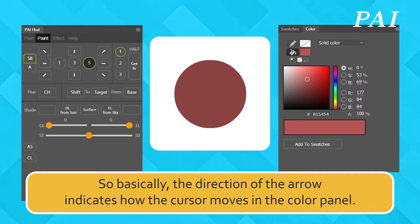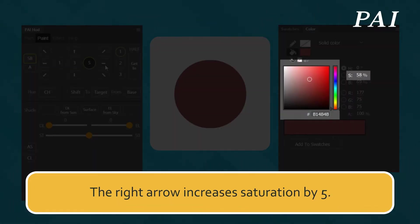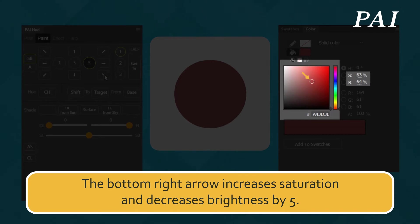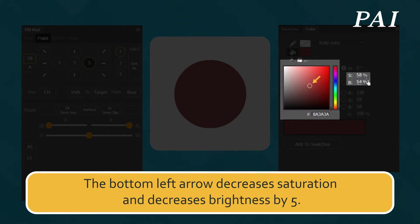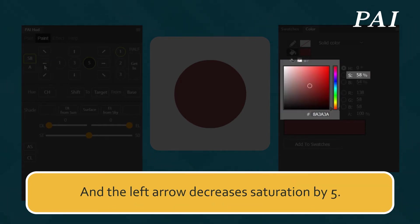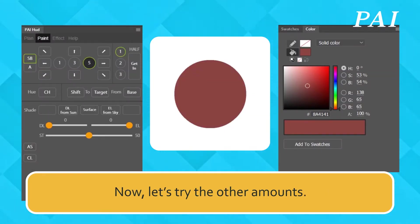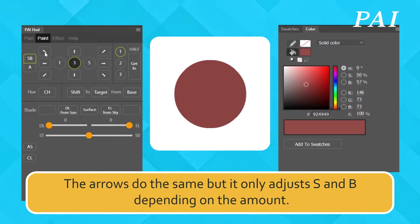Basically, the direction of the arrow indicates how the cursor moves in the color panel. The right arrow increases saturation by 5. The bottom-right arrow increases saturation and decreases brightness by 5. The bottom-left arrow decreases saturation and decreases brightness by 5. The left arrow decreases saturation by 5. The arrows do the same but adjust S and B depending on the selected amount.